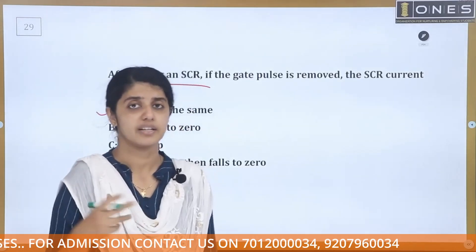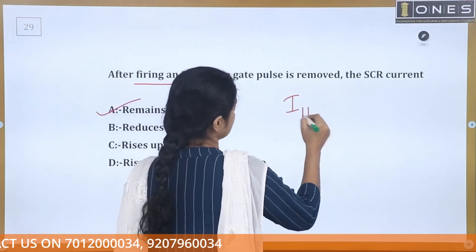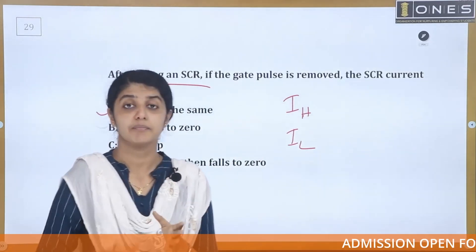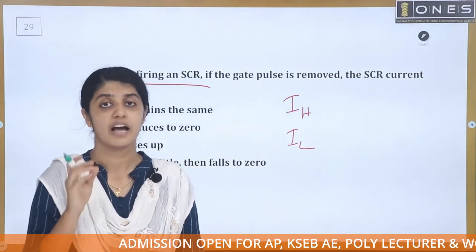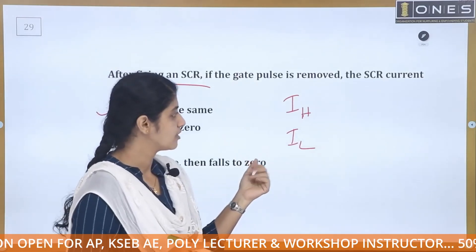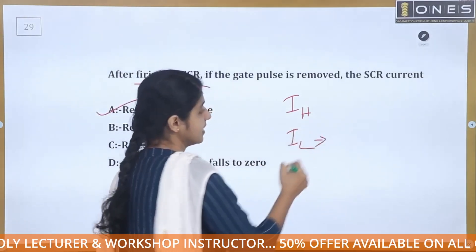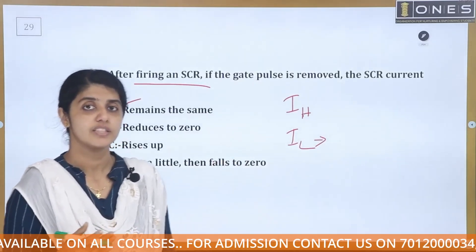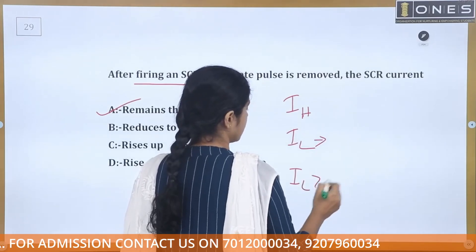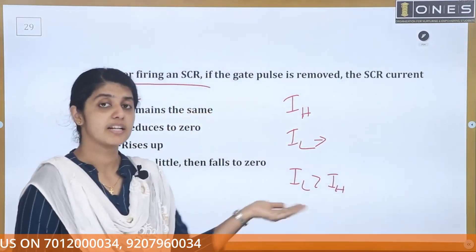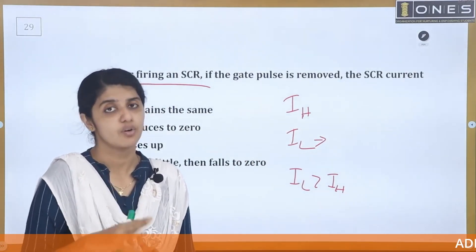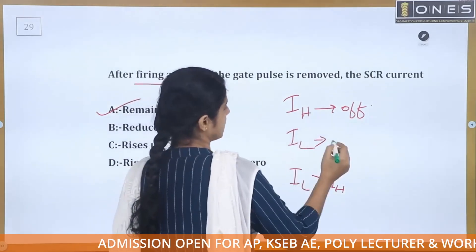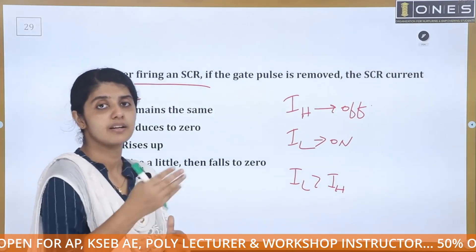To turn on and turn off an SCR, two current values are important: holding current and latching current. Holding current is not the same as latching current. Latching current is associated with turn-on of the SCR. Holding current is the minimum current needed to keep the SCR conducting — if the current falls below holding current, the SCR turns off.